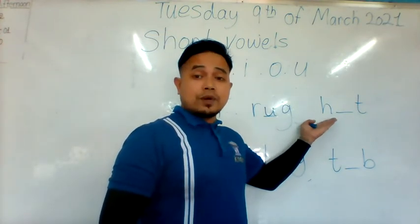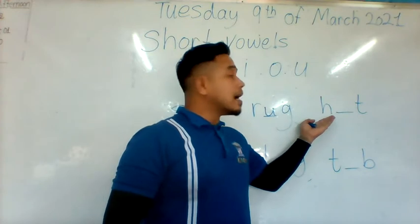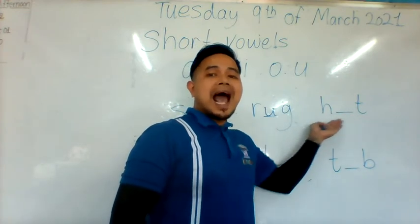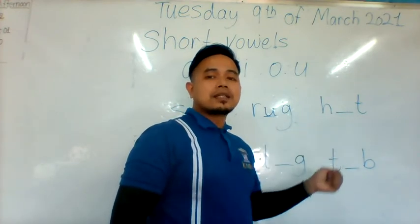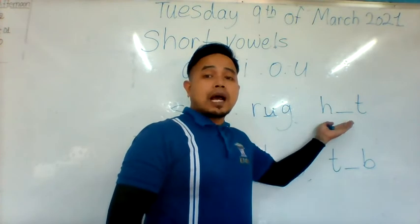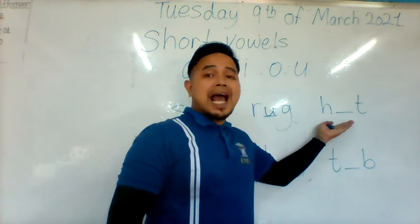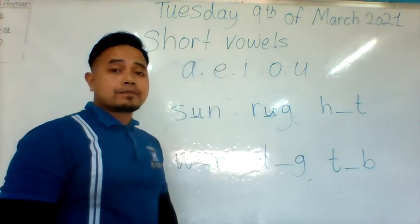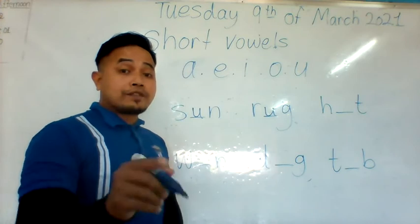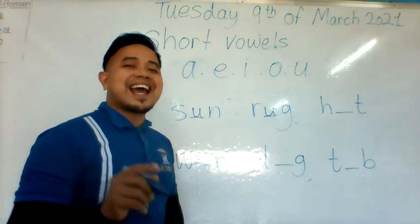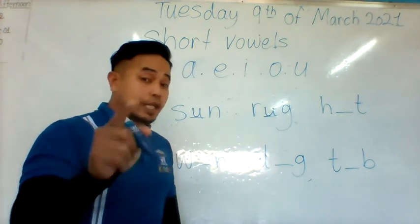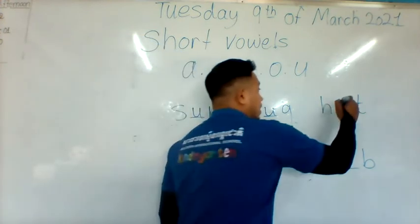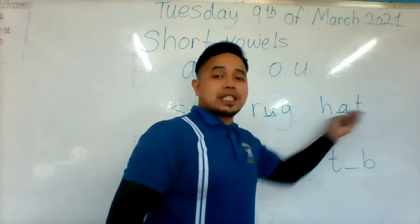Next one: the letter H — H, T — HAT. So the middle sound will be A. What makes the A sound? So if you say A, then you are correct — for HAT.